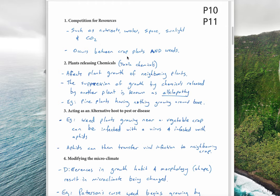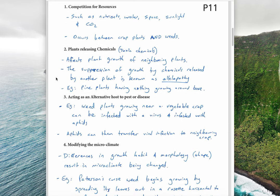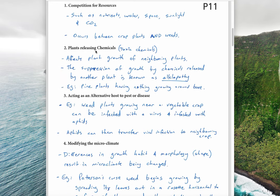For example, if we're trying to grow wheat, those wheat plants are competing against each other for these resources, but also competing against weeds. The next type of competition is plants releasing chemicals, called allelopathy. These are toxic chemicals that plants release which affect the growth of neighboring plants. The suppression of growth by chemicals released by another plant is known as allelopathy.